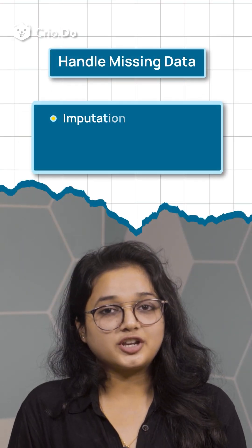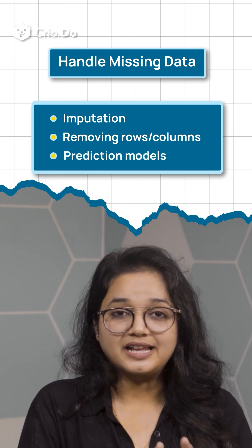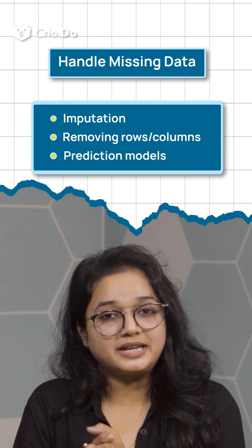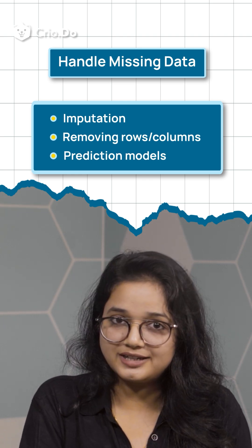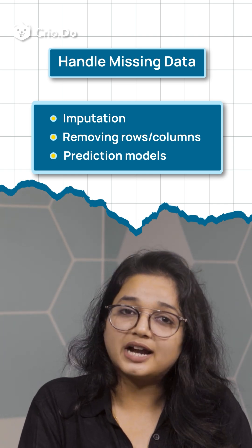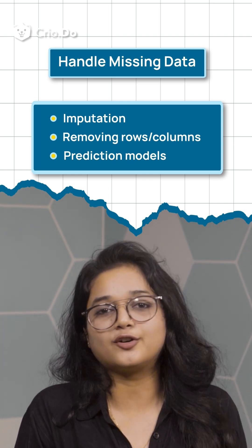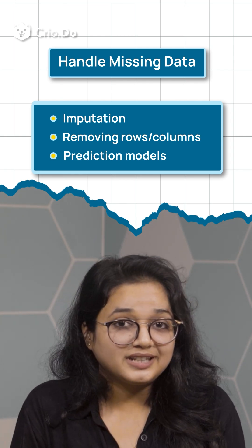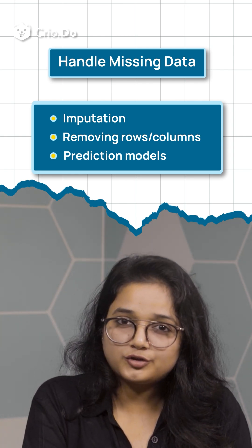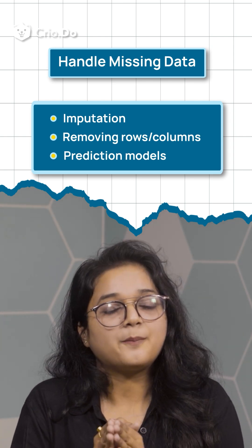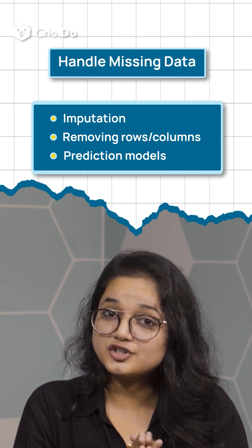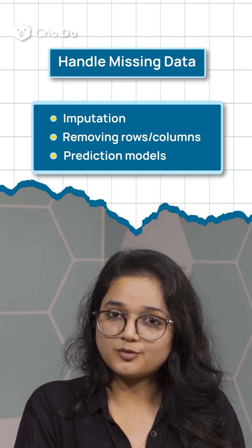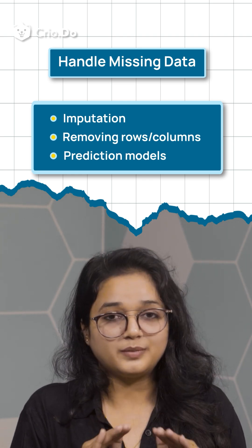Handle missing data. You can use the following strategies. Imputation: replace missing values with mean, median, or mode for numerical data, or the most frequent category for categorical data. Removing rows and columns: if missing data is prevalent in certain rows or columns, removing them may be appropriate. Prediction models: for more sophisticated imputation, predictive models can be built to estimate missing values.